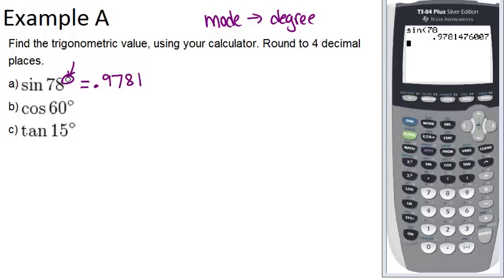Now, one thing you want to notice is your calculator might not work exactly like this one. Some calculators, you have to put the number in first before pushing sine, cosine, or tangent. So if it didn't work when you tried to do sine 78 like this, try doing it the other way around.